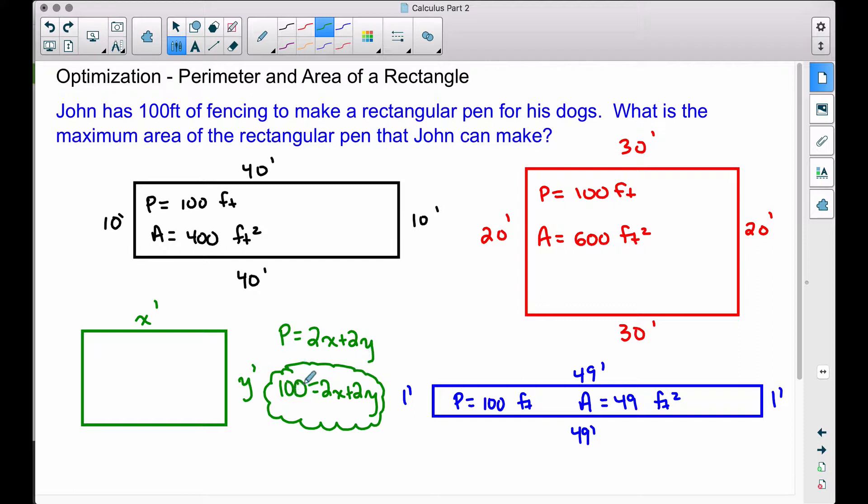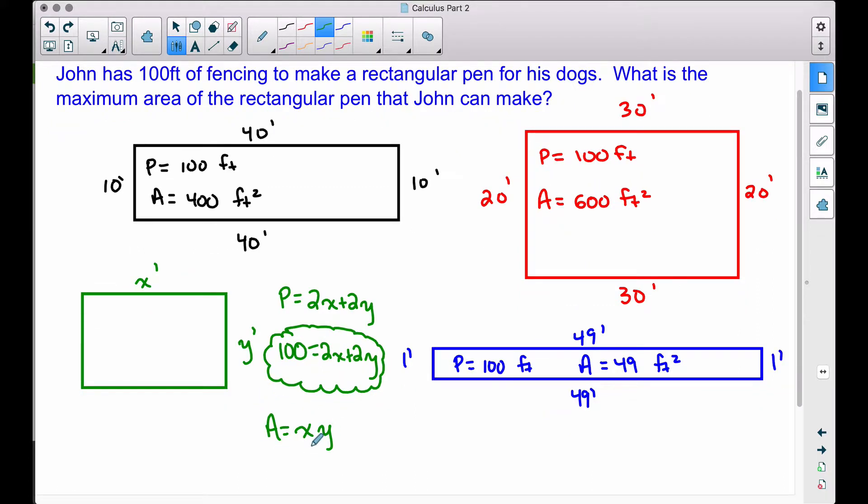100, that's the perimeter, is equal to 2x plus 2y. Now we also have another equation that we want to use as well. The area of this rectangle is length times width, or we can take x times y. This is going to be the formula that we want to optimize. And in this case, we want to find the maximum area.